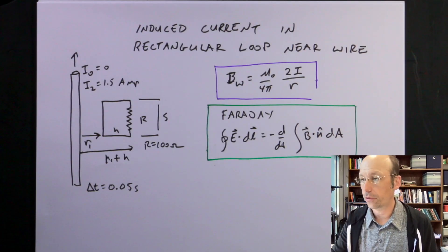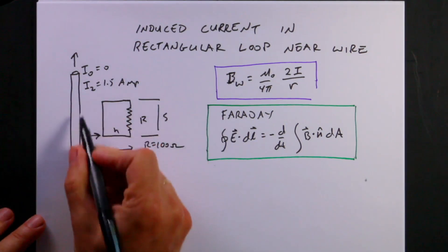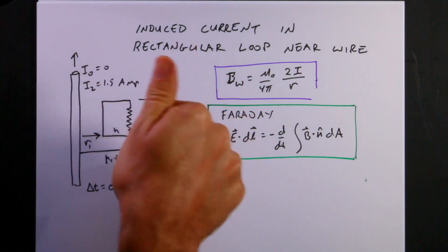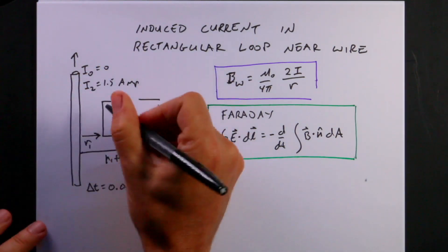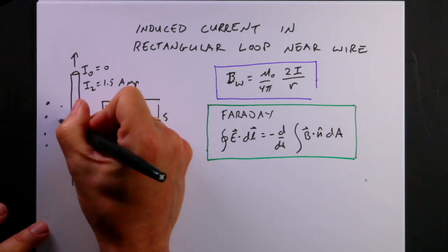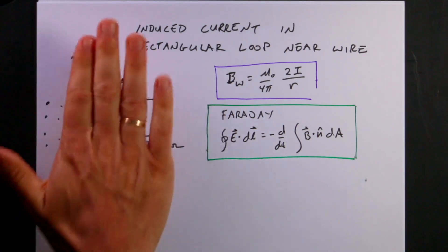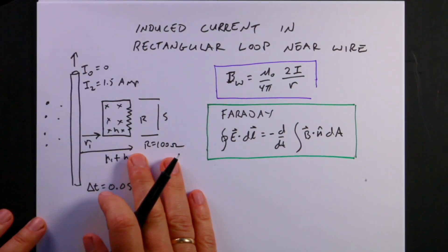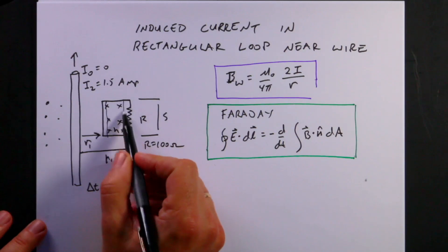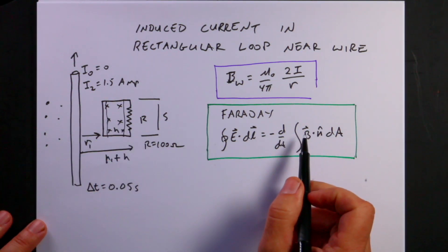Let's think about this conceptually. If I have a current I₂ going up, I can describe the direction of the magnetic field using the right-hand rule: thumb in the direction of current, fingers show the field direction. So over here the field goes into the board — marked with x's — and on the other side it comes out, marked with dots. I can't just calculate the magnetic field at one point because it varies with distance, so I'll need to integrate.